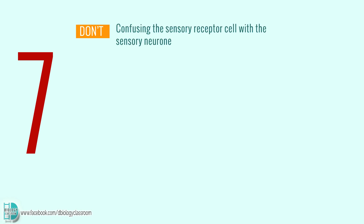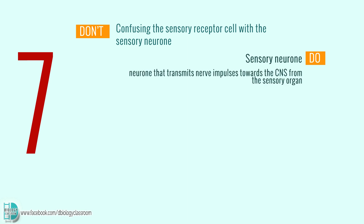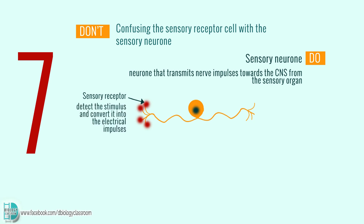Number 7: Confusing the sensory receptor cell with the sensory neuron. The sensory neuron is the neuron that transmits nerve impulses towards the central nervous system from the sensory organ. Some of them have sensory receptors at their end, which help to detect the stimulus and convert it into electrical impulses. Some sensory neurons synapse with specialized sensory receptor cells, which are in charge of the conversion of the energy.